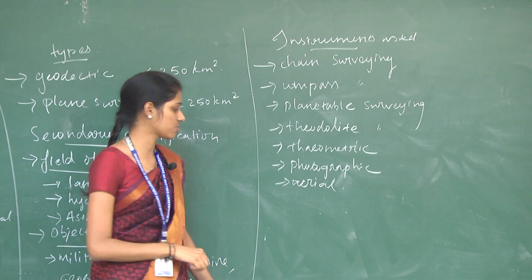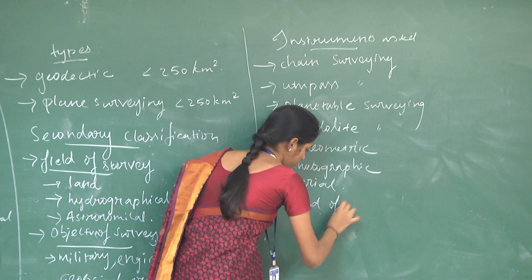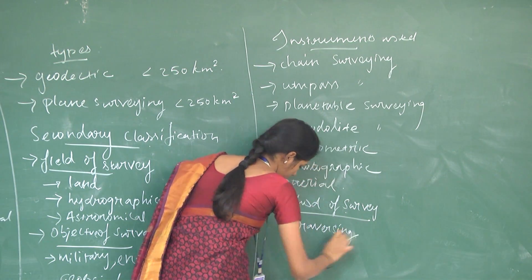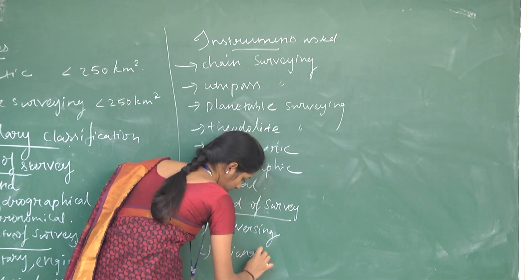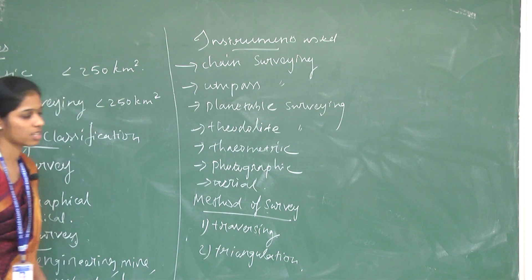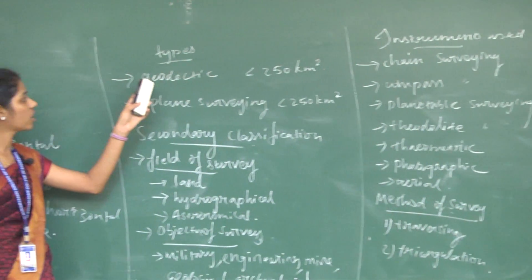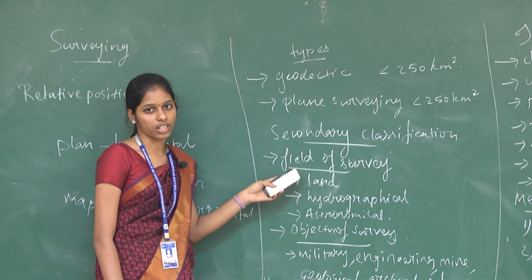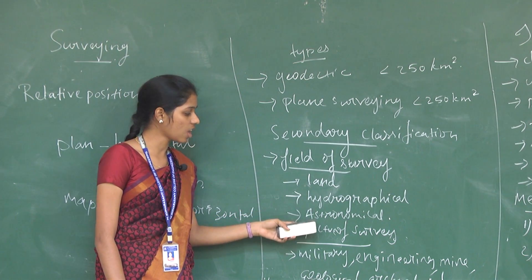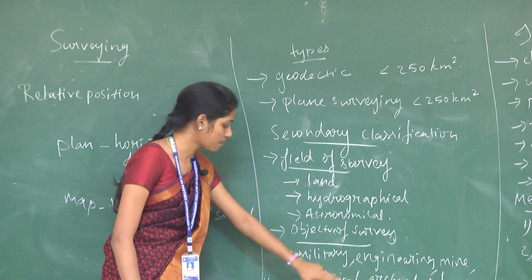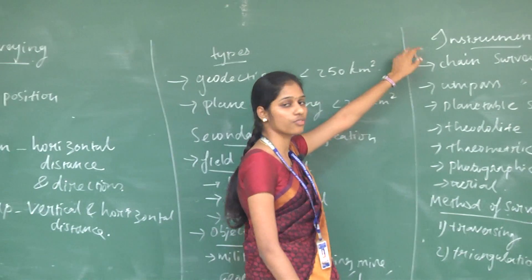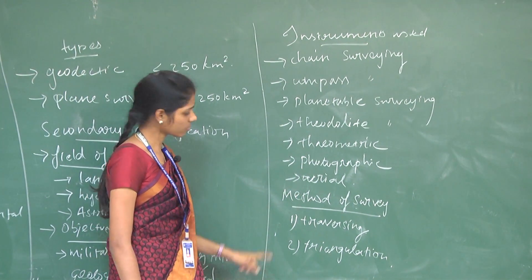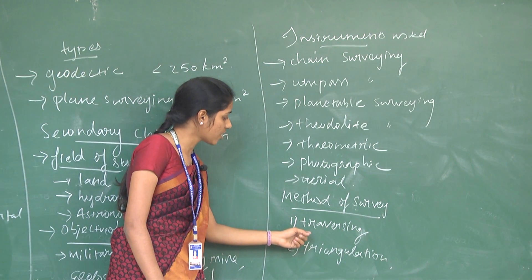According to the method of surveying, it is further classified into two types: traversing and triangulation. In summary, surveying is primarily classified into geodetic and plane survey based on area. Secondary classifications are: by field of survey (land, hydrographical, astronomical); by objective (military, engineering, mine, geological, archaeological); by instruments used (chain, compass, plane table, theodolite, tachymetric, photogrammetric, aerial); and by method (traversing and triangulation).